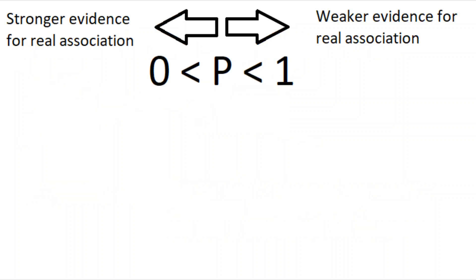P-values are scored on a scale where the closer the score is to 1, the weaker the evidence for a real association, and the smaller the score, the stronger the evidence for a real association.